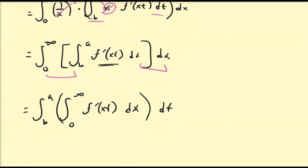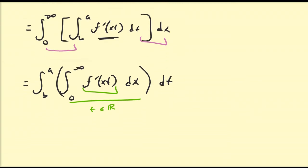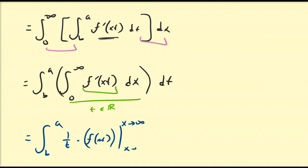Now I'm going to integrate this function with respect to x. In this case, t is a constant — namely some constant in between b and a. So using our fundamental theorem of calculus, by u-substitution, that's going to be equal to 1/t times f(xt), evaluated as x goes to infinity and as x goes to 0, dt.